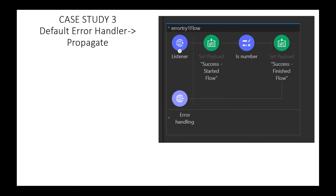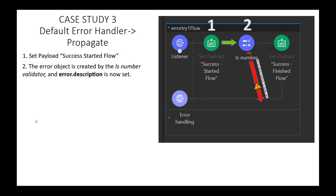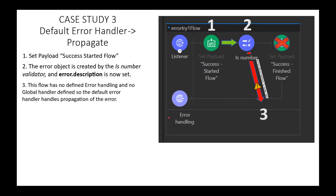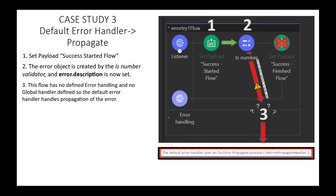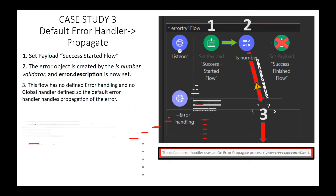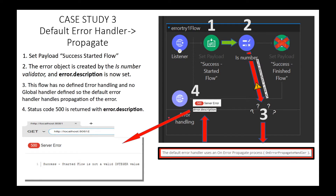Case Study 3: what happens if you don't have an error handling routine defined and an error is raised? What output do you think the client will receive? We begin at the SetPayload transformer, setting a string equal to SUCCESS STARTEDFLOW. In step 2, we move to the IsNumberValidator. In step 3, it's not an integer, so we have an error condition and an error description. We try to find an error handler; however, no error handling routine is defined, and there is no global handler defined. In this situation, the Mule default error handling routine catches the error. The default behavior is that of an OnErrorPropagate. In step 4, a status code of 500 is returned, along with the error description 'SUCCESS STARTEDFLOW is not a valid integer value.'